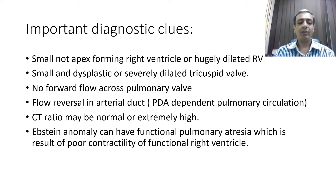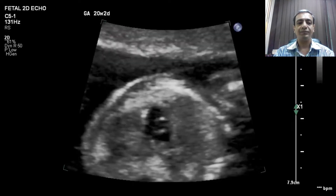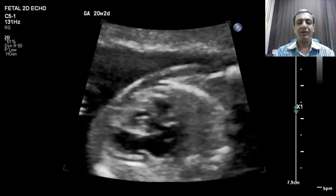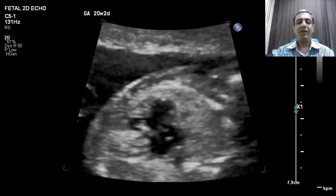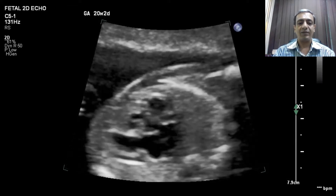Ebstein anomaly can have functional pulmonary atresia, which is a result of poor contractility of the functional right ventricle. This can be part of PA IVS also. So let's look at fetal imaging and fetal echo and how to suspect this diagnosis.